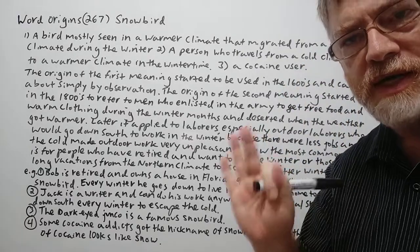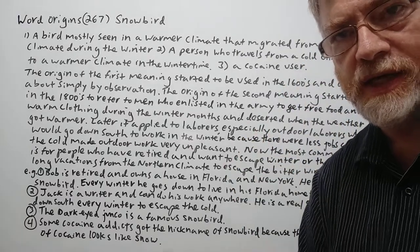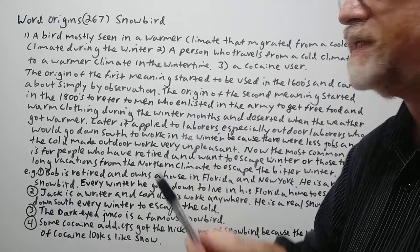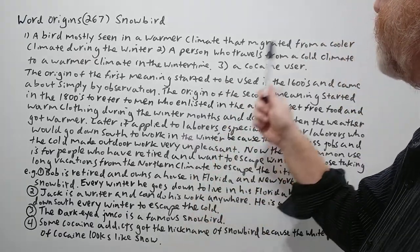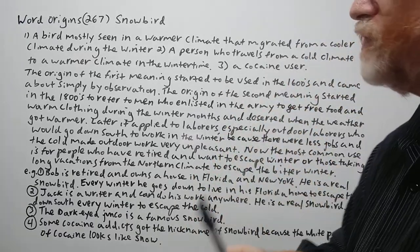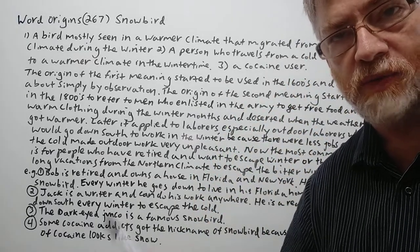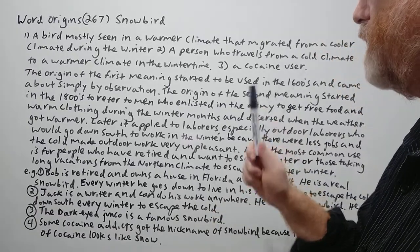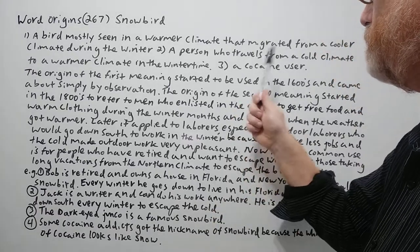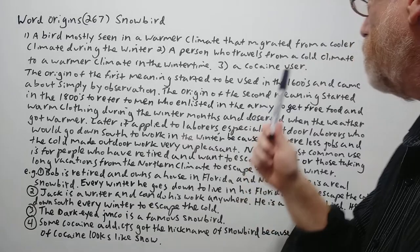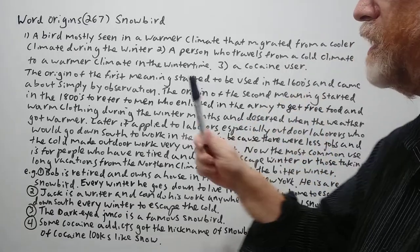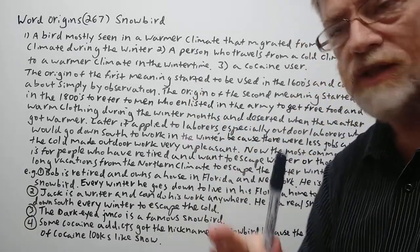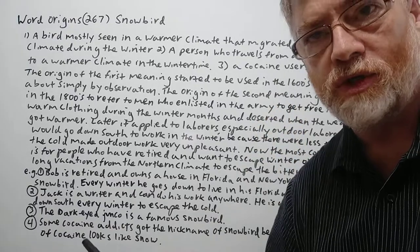We have three meanings today. The first one: a bird mostly seen in a warmer climate that migrated from a cooler climate during the wintertime. This is the original meaning. Number two: a person who travels from a cold climate to a warmer climate in the wintertime. The third one means a cocaine user.